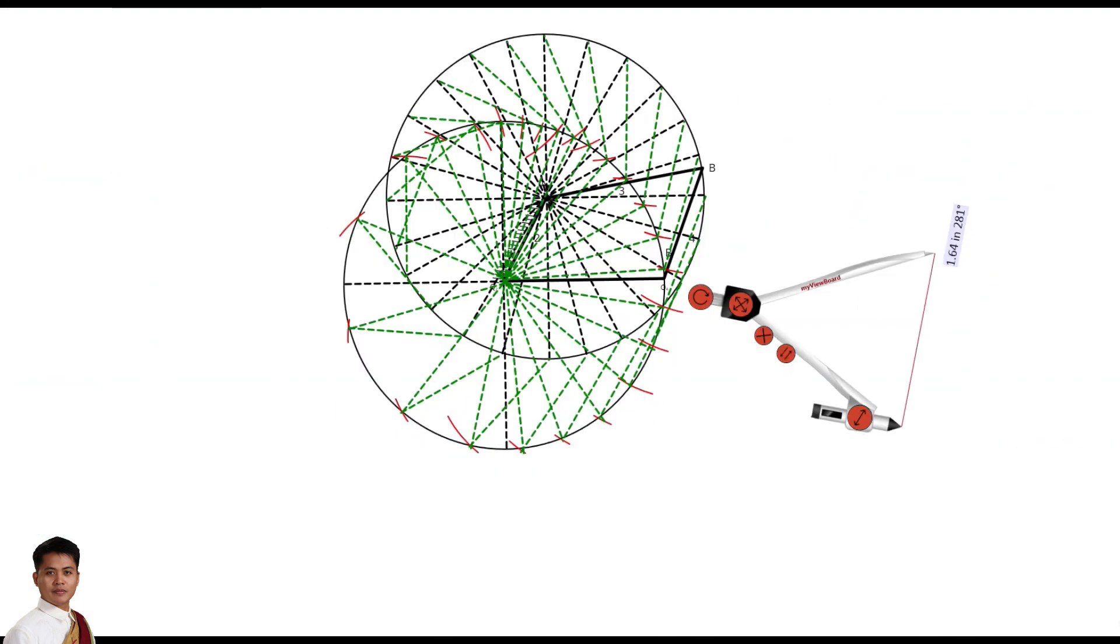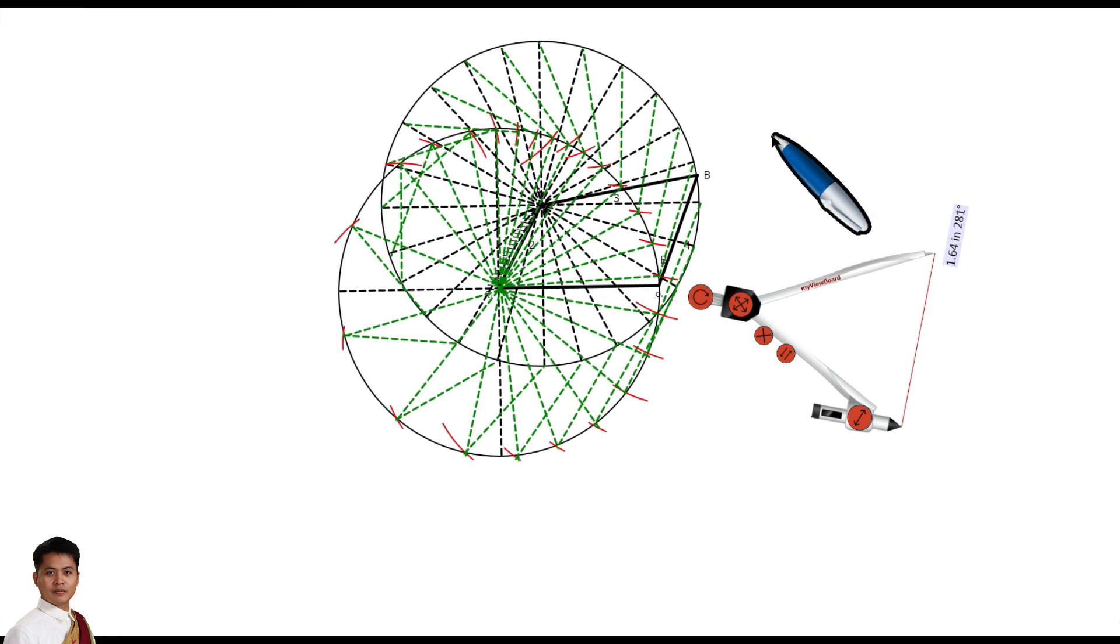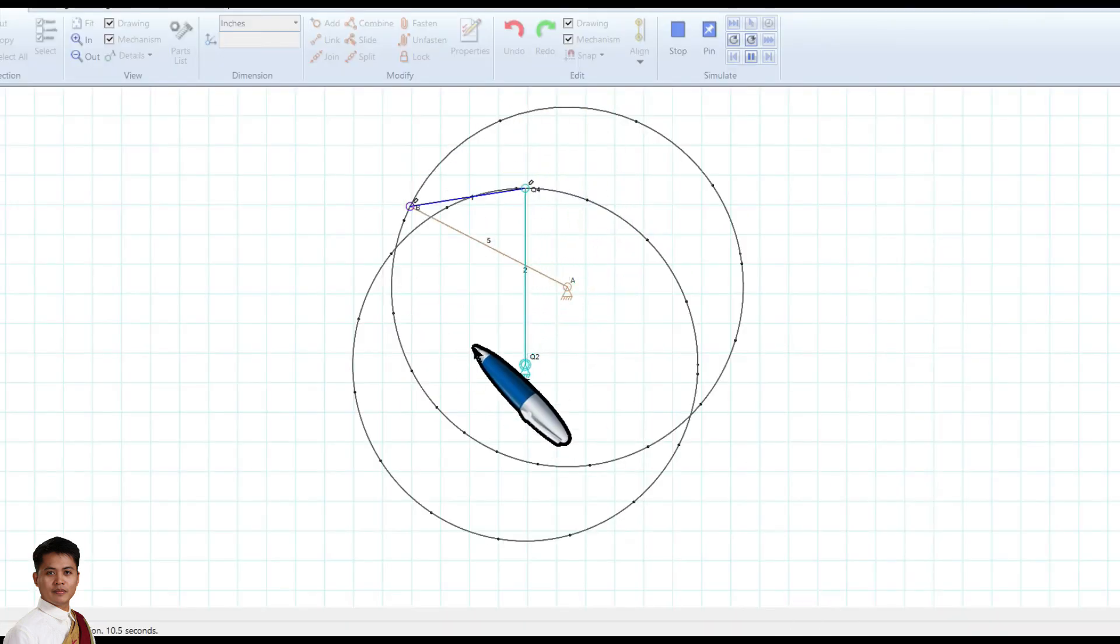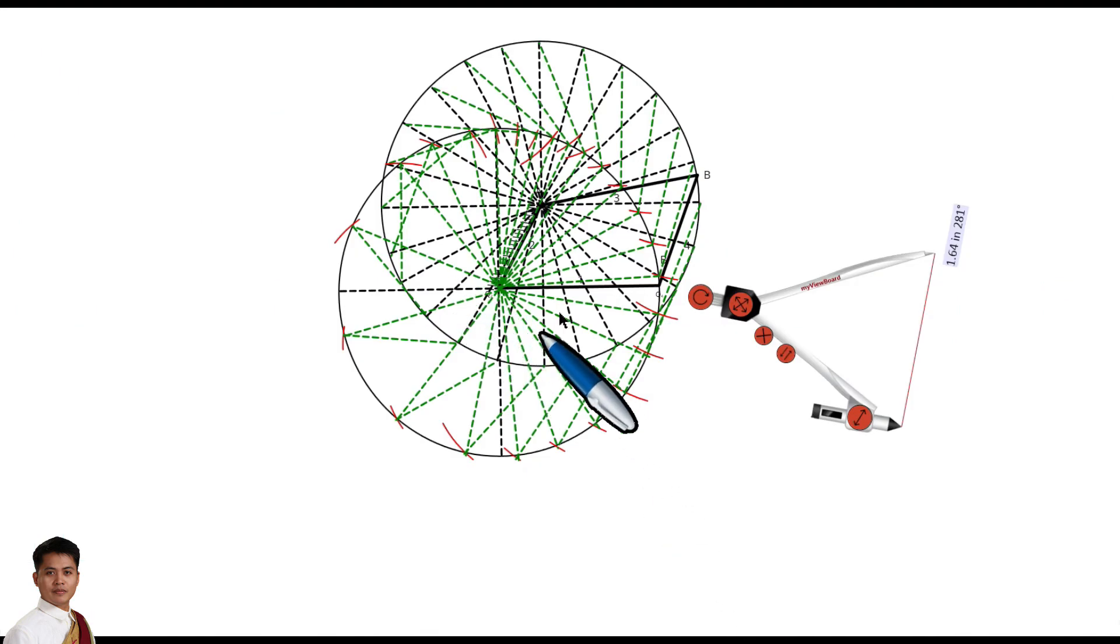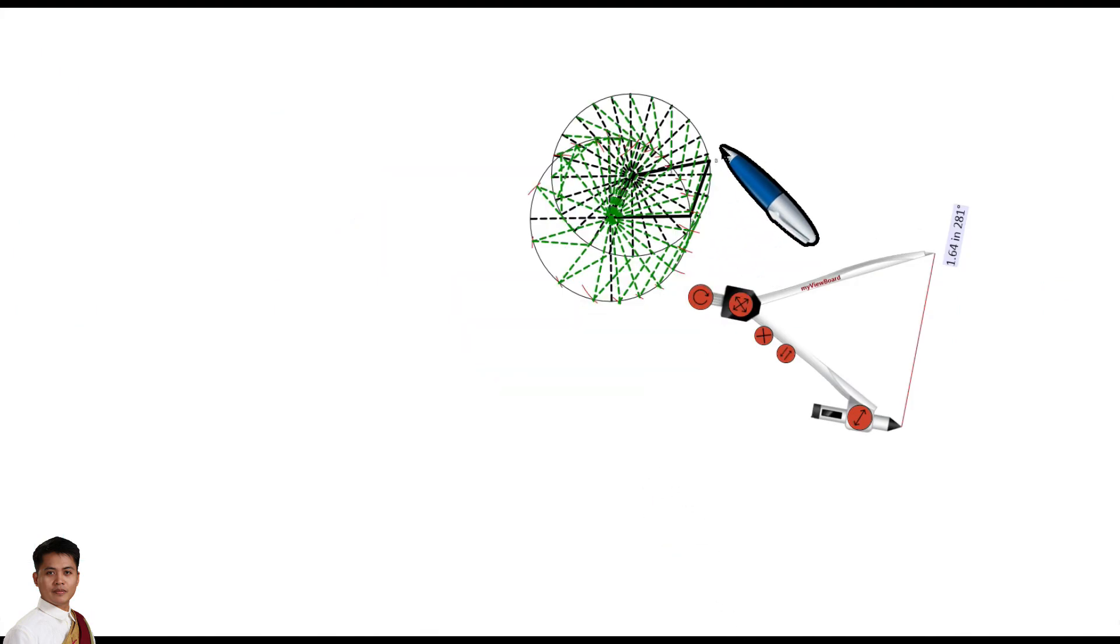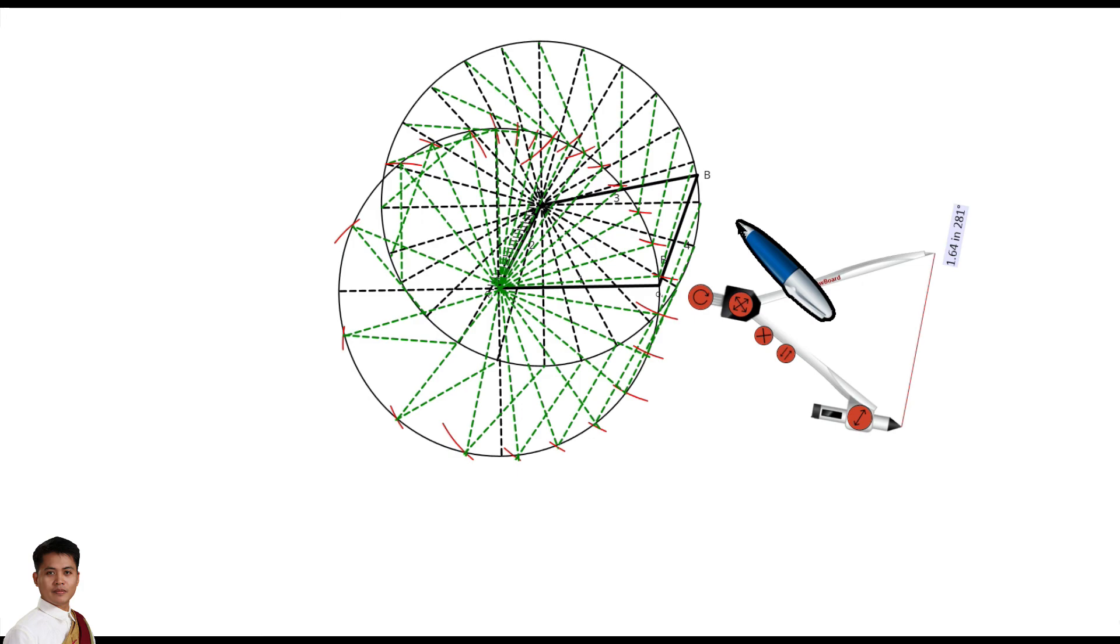So here in our manual solution or graphical method, this is not drawn in scale, so same with this. But the path, we can check that this is actually the same with this one. So that's all for this video. Thank you for watching.